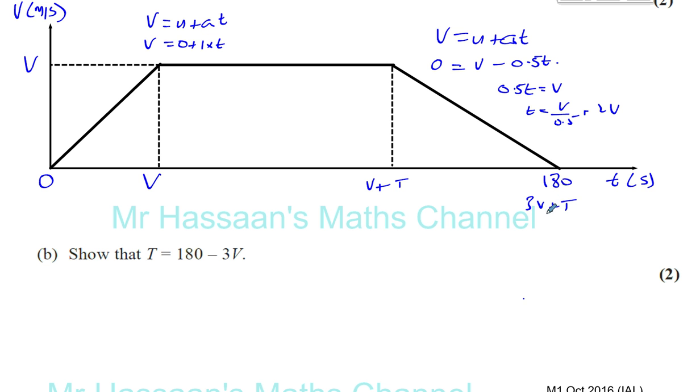And we can see that 3V plus T is the same as 180. 3V plus T is 180 seconds. And we want to find that and make T the subject. That's 180 take away 3V. So there we have it. That's part B.